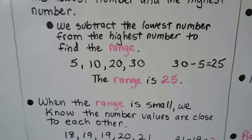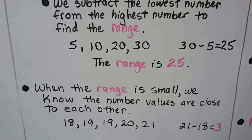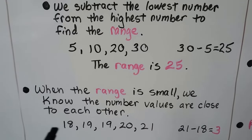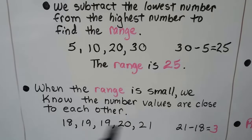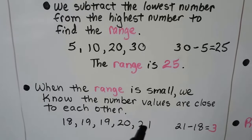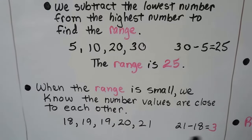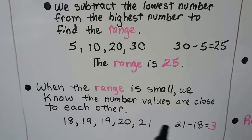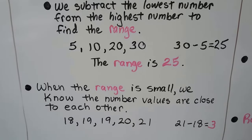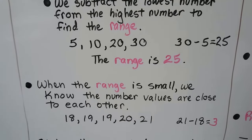When the range is small, we know the number values are close to each other. So we have 18, 19, 19, 20, and 21. These numbers are kind of close to each other. When we take the highest number, 21, and subtract 18, the lowest number, we get a 3. So we know all the number values in the set are very close to each other because that range is such a small number.